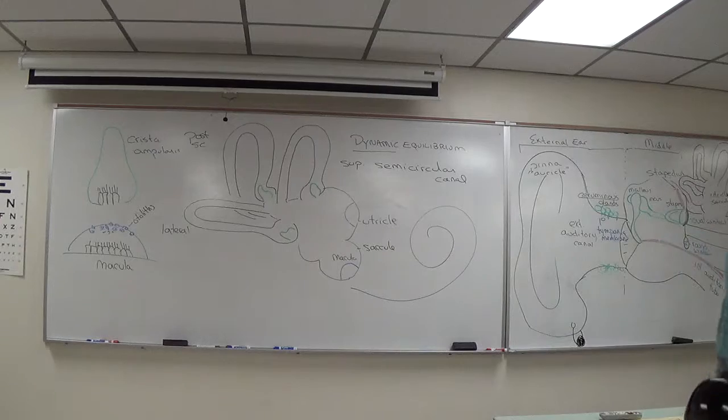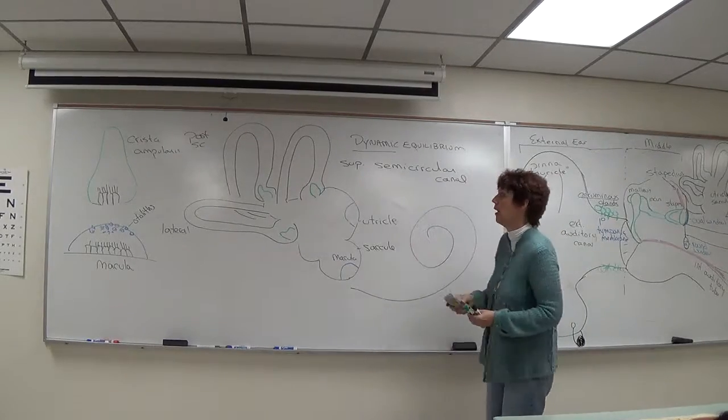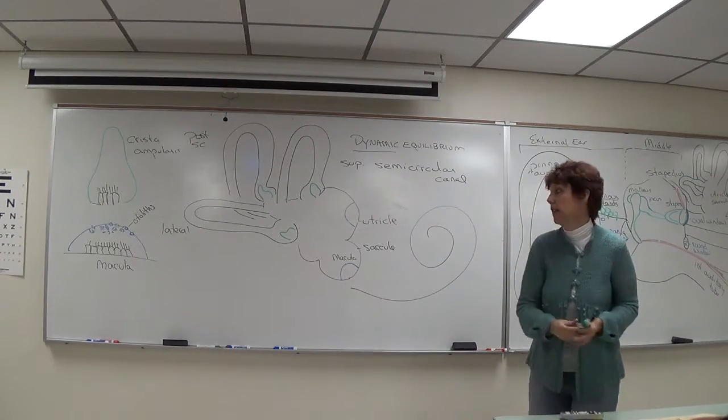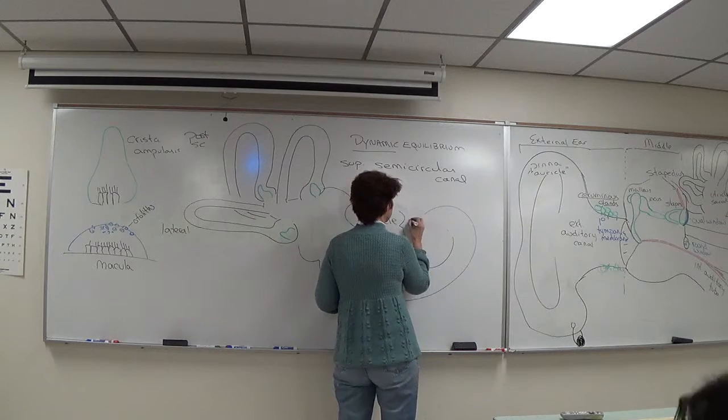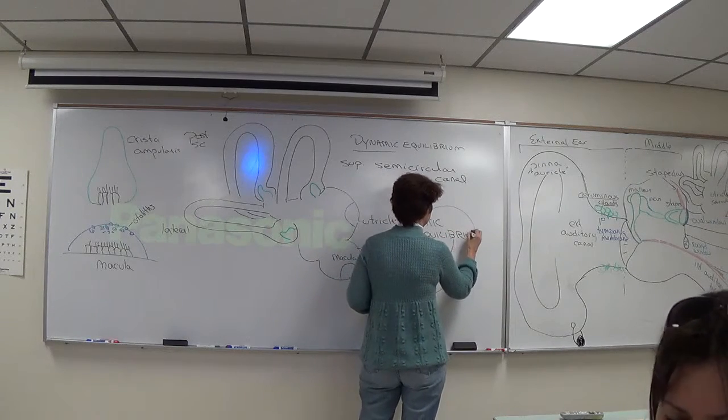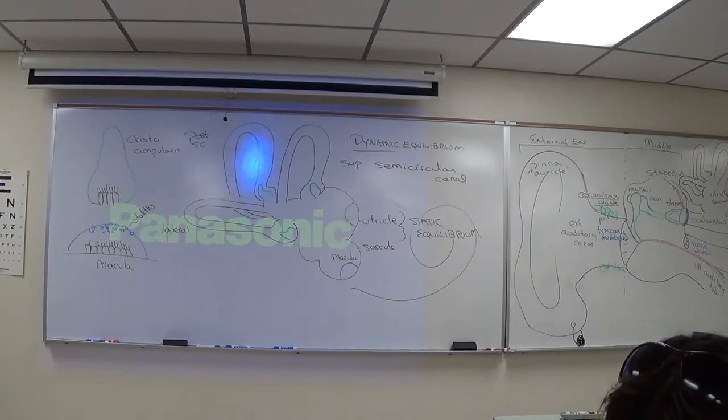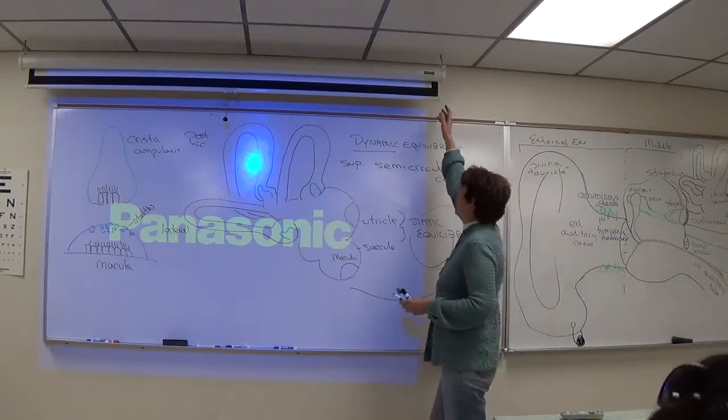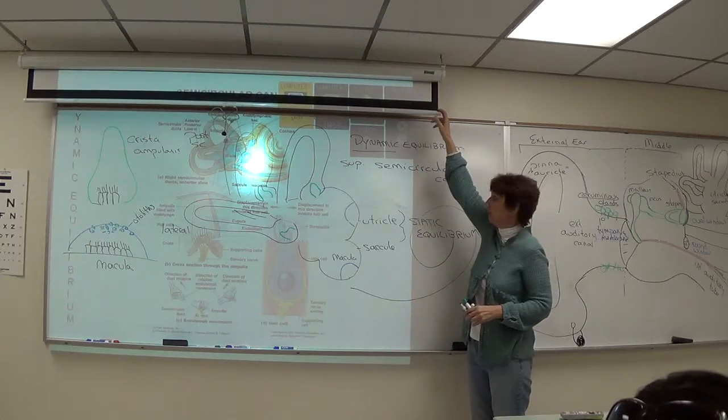So that's the end of the lecture. I just want to show you a couple of pictures of these otoliths. So what I want you to know is the dynamic equilibrium is for the semicircular canals. The utricle and saccule are involved in what we know as static. That means not moving. Dynamic equilibrium is all of the semicircular canals. Static equilibrium is utricle and saccule.